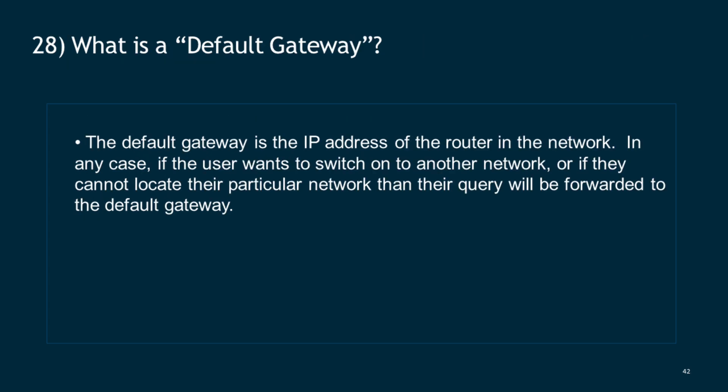Question 28: What is a default gateway? The default gateway is the IP address of the router in the network. If a user wants to switch to another network, or if they cannot locate their particular network, their query will be forwarded to the default gateway.